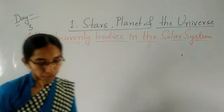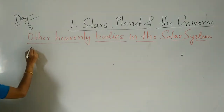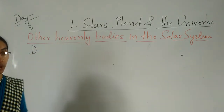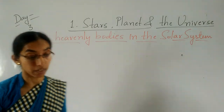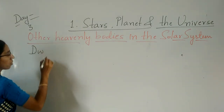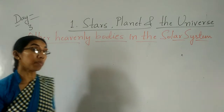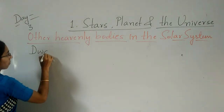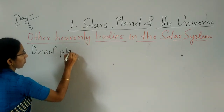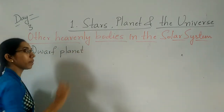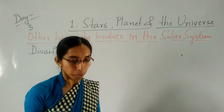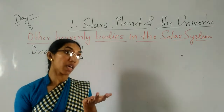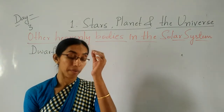The first other heavenly body is the dwarf planet. Which is the dwarf planet? Pluto is called a dwarf planet. Like that, other planets are also there which are called dwarf planets. Only we know of Pluto as a dwarf planet, but there are others which are also considered dwarf planets.